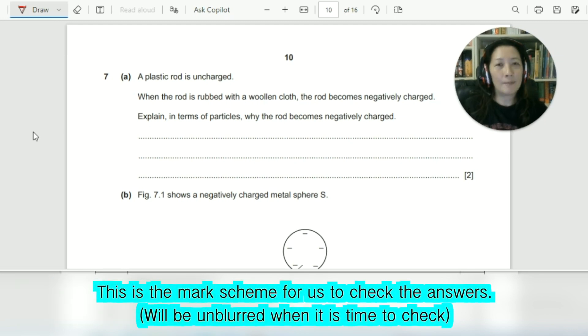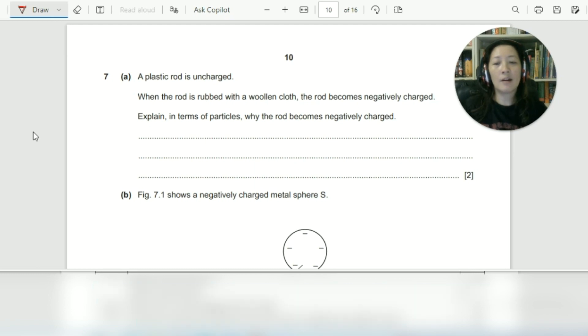Question seven A, a plastic rod is uncharged. When the rod is rubbed with a woolen cloth, the rod becomes negatively charged. Explain in terms of particles why the rod becomes negatively charged. So for this question, you need to talk about how the particles are able to make the rod become negatively charged.